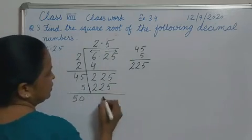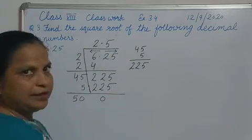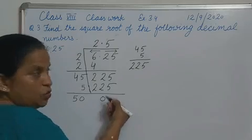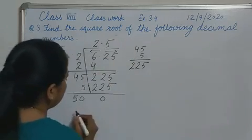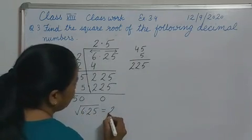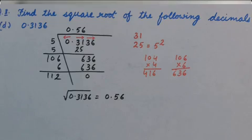Because remainder is 0, so square root of 6.25 is 2.5. Part B: 0.3136. We will find out the square root by long division method.